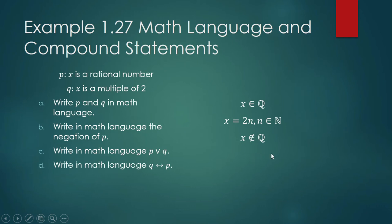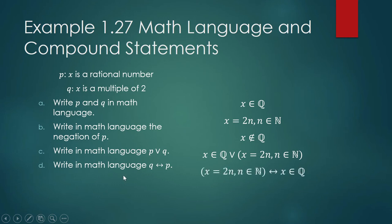Although writing 'x is not an element of the set of rational numbers' sounds awkward, you can simply say 'x is not a rational number.' For the compound statement p or q: 'x is a rational number or x is a multiple of two.' For the biconditional q if and only if p: 'x is a multiple of two if and only if x is a rational number.' We are not concerned with whether these are true or false.